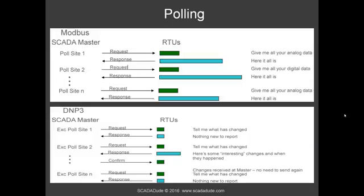DMP on the other hand acts a little differently. It says 'hey, you got something for me?' and the device says 'no, I got nothing for you,' then it moves on to the next one. That device might say 'yeah, I got some information for you' and hands it over. So if you look at the message sizes, Modbus is always big, but DMP is smaller because it only gives you what has changed. That cuts down the traffic on the network, and even though DMP has a bigger packet, it's actually smaller overall when polling devices.